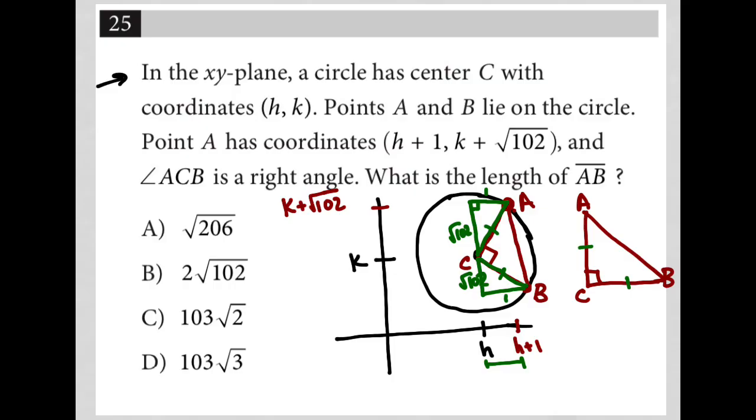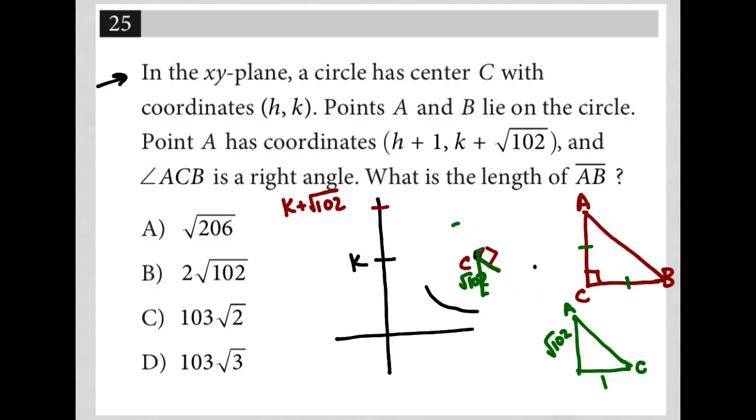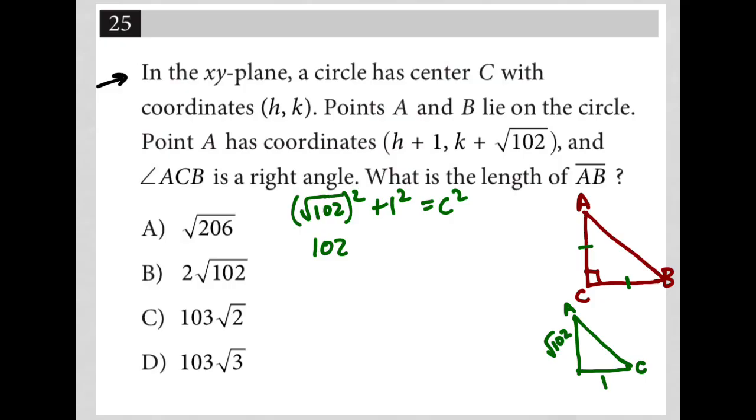So I need to make another right triangle, this green one, basically. So I have this other right triangle here, where I have one leg is 1, and the other leg is root 102. And I'm just trying to find the hypotenuse. This hypotenuse would give me my AC, but AC and CB are the same. So I have Pythagorean theorem. This is just square root of 102 squared plus 1 squared equals C squared, which is 102 plus 1 equals C squared, 103 equals C squared. C is equal to the square root of 103, which makes this the square root of 103, which makes this the square root of 103, and this side the square root of 103.